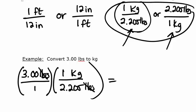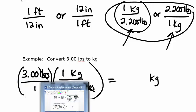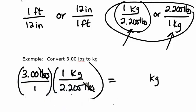Then we simply do the math. The unit left is kilograms. Multiply all the numerators: 3 times 1 is 3. The bottom: 1 times 2.205 is 2.205. Dividing 3 by 2.205, you get 1.36 kilograms. That is our answer.